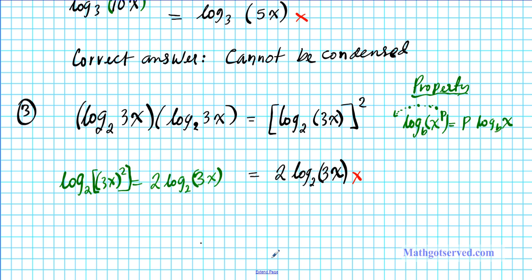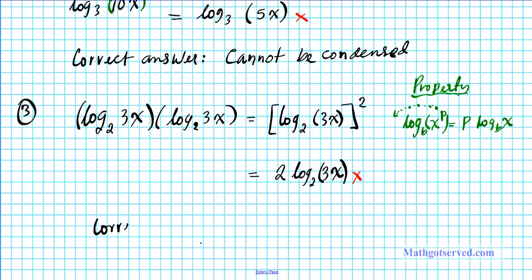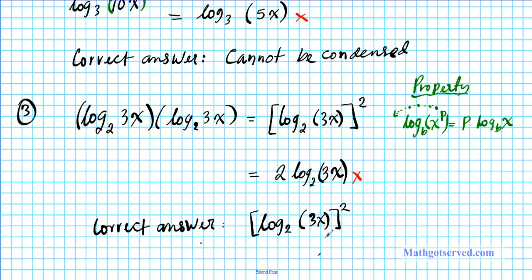Had it been log base 2 of 3x raised to the second power — where 3x squared is the argument — then you could express it as 2 log base 2 of 3x. But since the argument here has no power attached to it, the power property does not apply. The correct answer is log base 2 of 3x, the whole expression, raised to the second power. We can't go further than this.